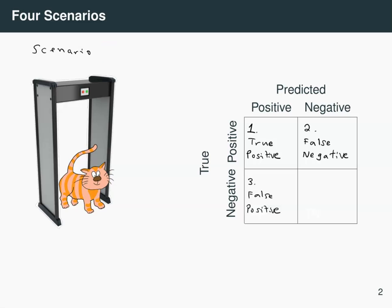In scenario four, he just comes as he is, he's not carrying anything metallic, and the alarm doesn't go off. This is what we call a true negative. So these are the four possible options that could happen. In this case, we detect things correctly, and in this case, we detect things correctly. However, we make errors in these two places.